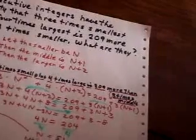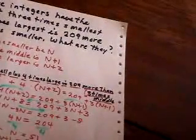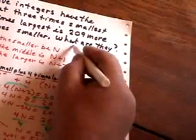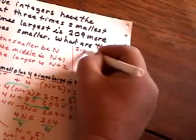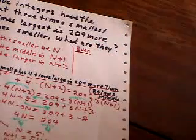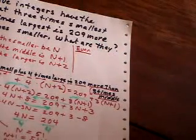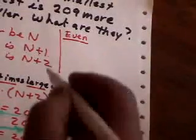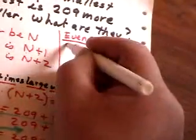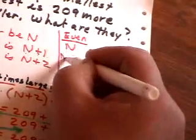Now, the only difference that they may give you on a consecutive integer problem is the following. They may say it's consecutive even numbers. And if it's consecutive even numbers, then instead of saying n, n plus one and n plus two, even numbers are two apart.